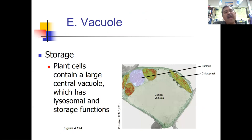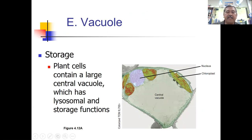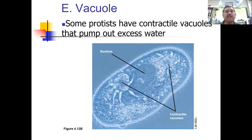The vacuole is necessary for storage. Plant cells contain a large central vacuole with lysosomal and storage functions — a plant might store water, water with minerals, or liquid with sugar food molecules. Some protists, which are animal-like unicellular structures, also have vacuoles — contractile vacuoles seen in paramecia are used to pump out extra water.